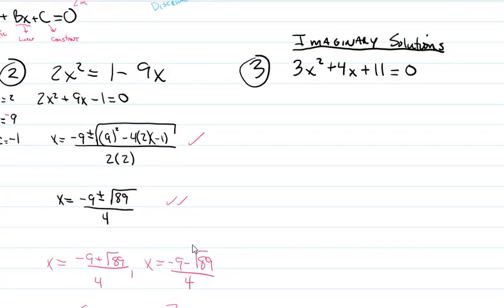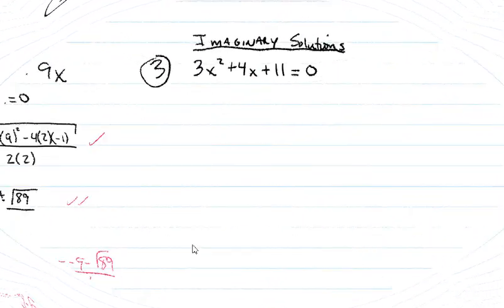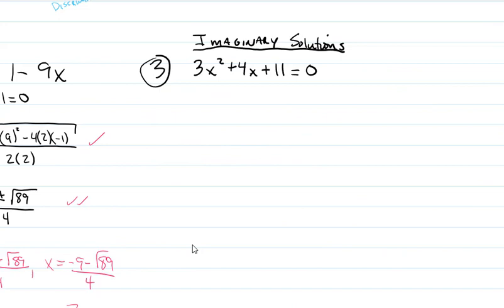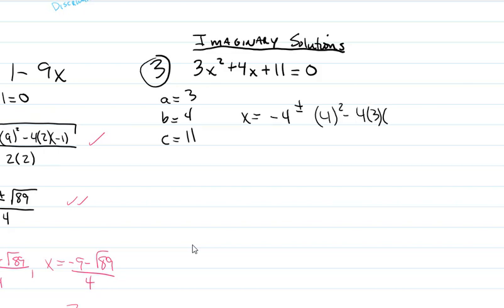Now let's take a look at number three, which involves imaginary solutions. We already know our a, b, c values: a is 3, b is 4, and c is 11. So we write x equals negative 4 plus or minus the square root of 4 squared minus 4 times 3 times 11, all over 2 times 3.